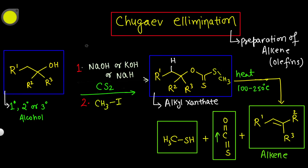In this session we will continue our legacy of organic named reaction series. We have already completed 20 organic named reactions alphabetically, and now today we will talk about Chugaev elimination. This is a named reaction, and on the screen you can see the general scheme of the reaction — a general overview.